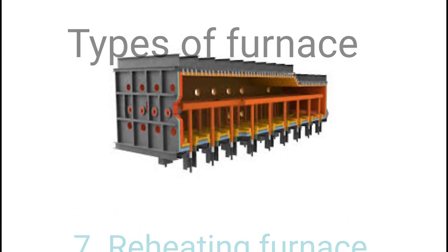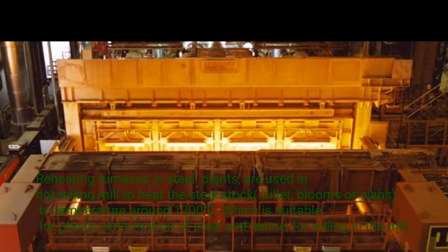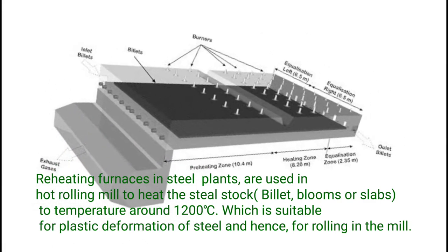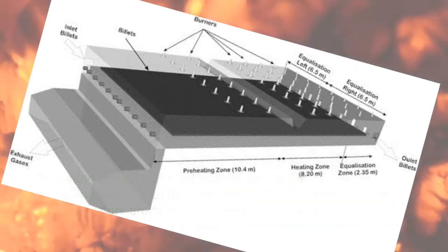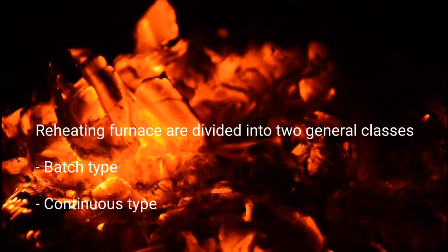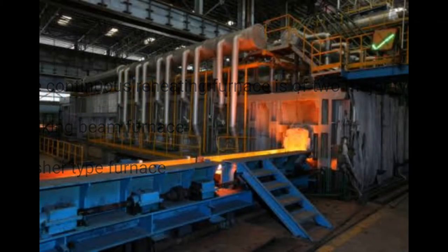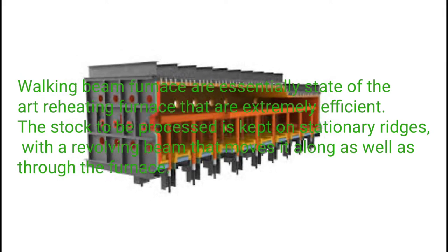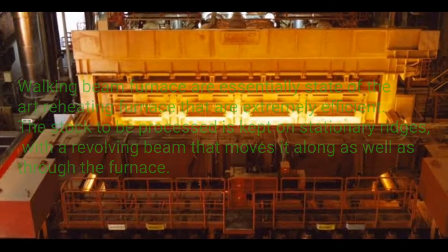Type 7: Reheating Furnace. Reheating furnaces in steel plants are used in hot rolling mills to heat steel stock — billets, blooms, or slabs — to temperatures around 1200°C, which is suitable for plastic deformation of steel and hence for rolling in the mill. Reheating furnaces are divided into two general classes: batch type and continuous type. The continuous reheating furnace has two major types: walking beam furnace and pusher furnace. Walking beam furnaces are essentially state-of-the-art reheating furnaces that are extremely efficient.